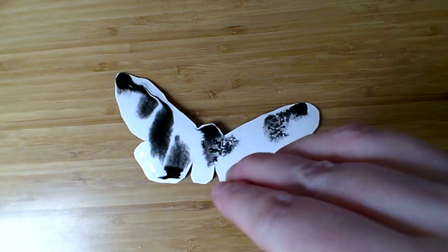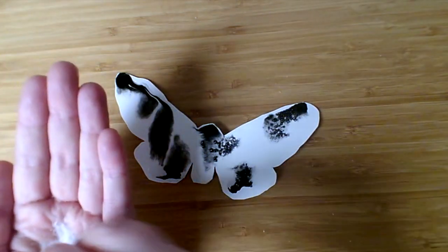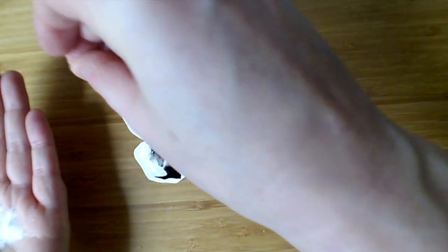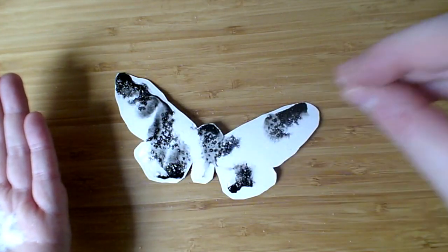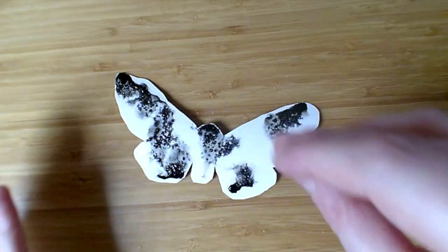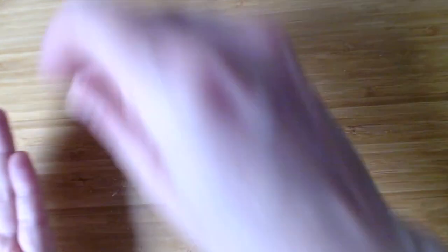Now, get some salt and sprinkle some salt on and around each blob. And you'll see that the paint starts to form amazing patterns just like the peppered moths in the book.